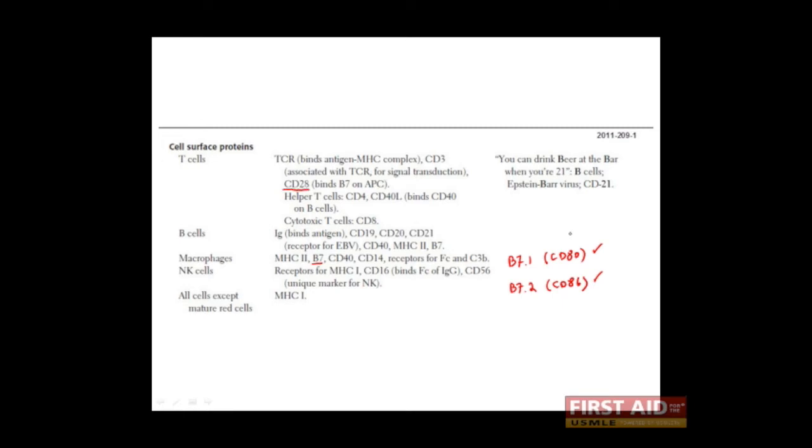If you can remember that the B7 molecules are also known as CD80 and CD86, you'll realize that there are two 8's here because there are two separate molecules. Thus, the receptor for these is known as CD28. That may or may not be helpful, but if it is, you can use it.